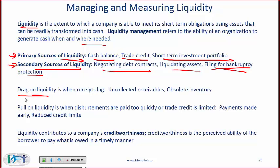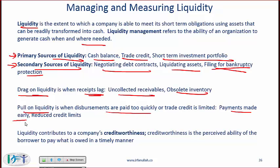From a testability perspective, remember these phrases. A drag on liquidity is when receipts lag — for example, uncollected receivables where suppliers are not paying fast enough, or inventory that is obsolete: you've spent the money but cannot sell it. A pull on liquidity is where you have to pay too quickly — for example, suppliers requiring cash on delivery and immediate payment for raw materials.